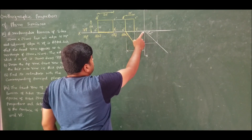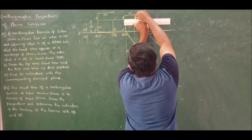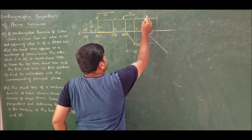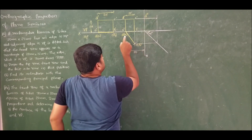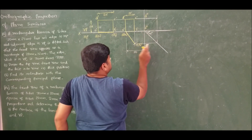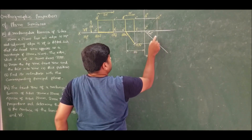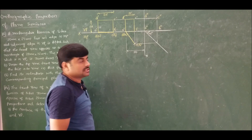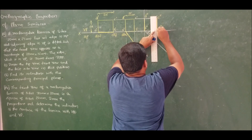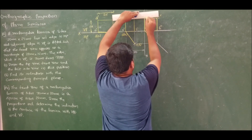Here we have D', then D'' and A''. D is here, so D'' is here. A' is here, so this will be A''. C' is here, so this is C''. B is here, giving B''. Now we construct one more rectangle to complete the construction. So this is the side view for the given problem.